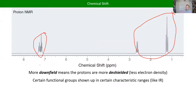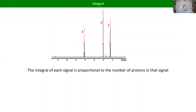Here's where it gets more specific than IR. The integral of each signal is proportional to the number of protons in that signal. You might not get an absolute number from the instrument, but if one curve is twice the size of another, you have twice as many hydrogens in that environment. It's a lot like doing empirical formula from gen chem — figuring out relative ratios. If you get a ratio of 1 to 1.5, you can't have 1.5 hydrogens, so you multiply to get whole numbers.